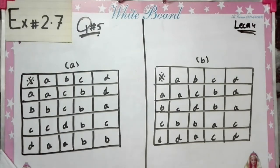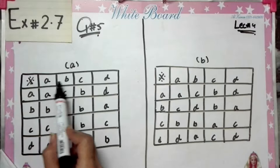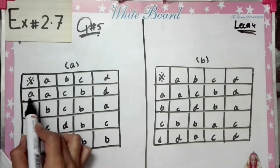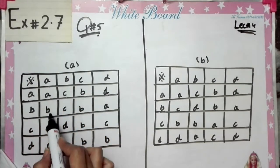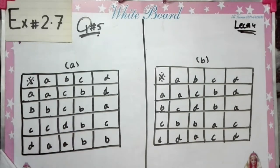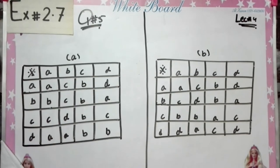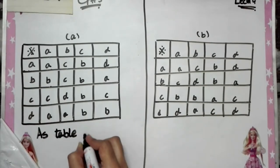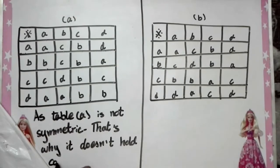Transpose means rows change into columns and columns into rows. For example, if the first row is A, B, C, D, then the first column should also be A, B, C, D. If the second row is A, A, C, B, D but the second column does not match — for instance here it should be C but here it is B — that means rows and columns are not the same, i.e., not symmetric. Therefore table A is not symmetric, and it does not hold the commutative property.